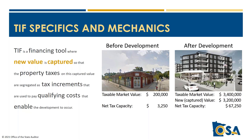Net tax capacity sounds odd compared to taxable market value. In 1988 the legislature tried to define values so they'd be similar in proportion to desirable effective tax amounts — that's why it got the label net tax capacity. In short, net tax capacity is a weirdly labeled term for value and it's the value used to calculate rates and taxes. In this example, the property has a before-development net tax capacity of $3,250 and an after-development net tax capacity of $67,250. The difference — $64,000 — is referred to as the captured net tax capacity.